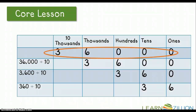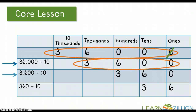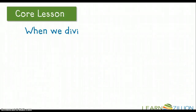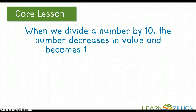Let's take a look at 36,000 on the place value chart. If we divide 36,000 by 10, we simply take away a zero and get 3,600. Dividing 3,600 by 10 gives us 360, and dividing 360 by 10 gives us 36. So instead of adding zeros like we did in multiplication when numbers were increasing, we are taking away zeros when dividing and our numbers are decreasing. When we divide a number by 10, the number becomes 10 times smaller.